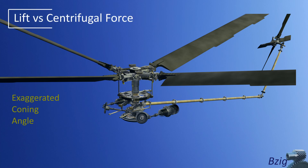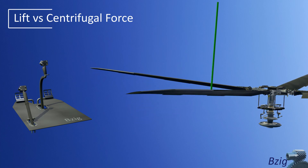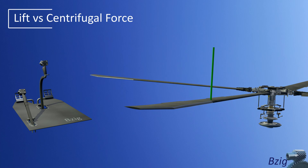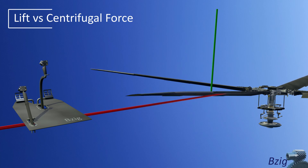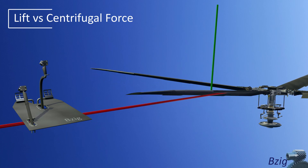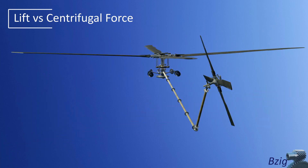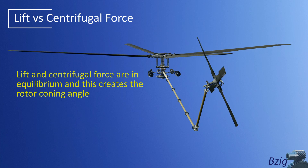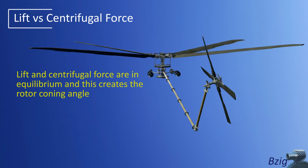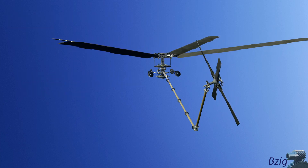The coning angle is formed because of equilibrium — a balance of forces between lift and centrifugal force. In the animation, the green vector shows the lift on the blades. Collective input changes the lift on the blades, creating a moment about the flapping hinge that causes the blades to flap. Because the blades are rotating, centrifugal force — represented by the red vector — creates an opposing moment about the flapping hinge. This restoring moment only occurs when the blades flap out of the plane perpendicular to the rotor mast. The net effect is the blades settle into an equilibrium position where the moment due to lift is balanced with the moment due to centrifugal force, resulting in the coning angle.